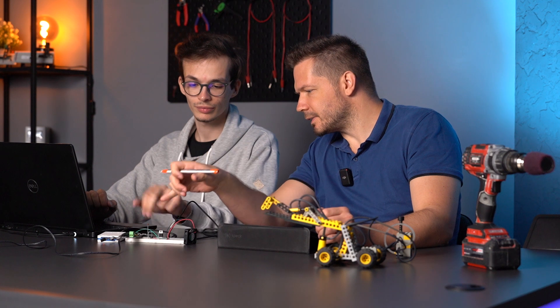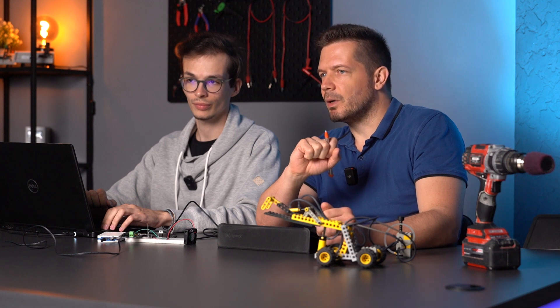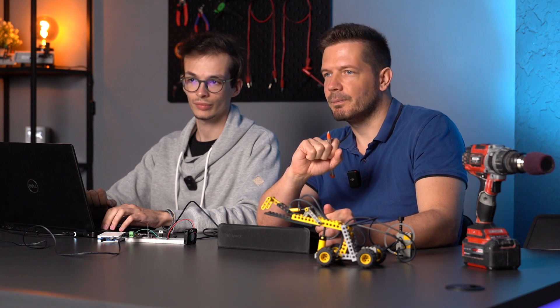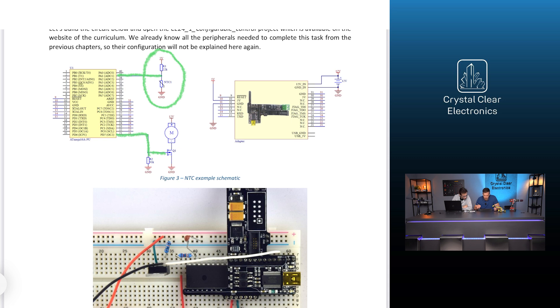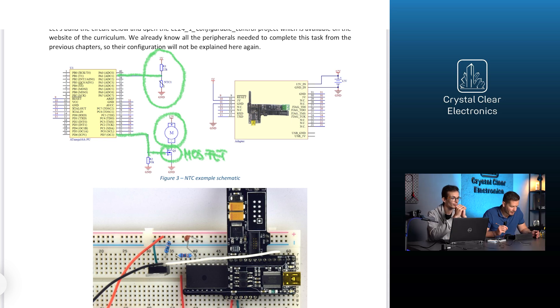To do this, we will make a voltage divider, so it includes another resistor. From its voltage we will be able to calculate the NTC resistance and from that the temperature in our program. On a serial board, we will receive the temperature above which the fan should be turned on. To make the hardware, we've built a circuit shown in the figure. The PA1 pin will be the voltage divider with the temperature-dependent resistor. The fan is connected to the PD7 pin along with an N-channel incremental MOSFET, which you have already learned about in the switching devices in Chapter 7. To download the firmware, open the project KE24-1 Configurable Control on the website of the curriculum. We have already covered all the peripherals needed in the previous chapters, so we won't explain their configuration here again.